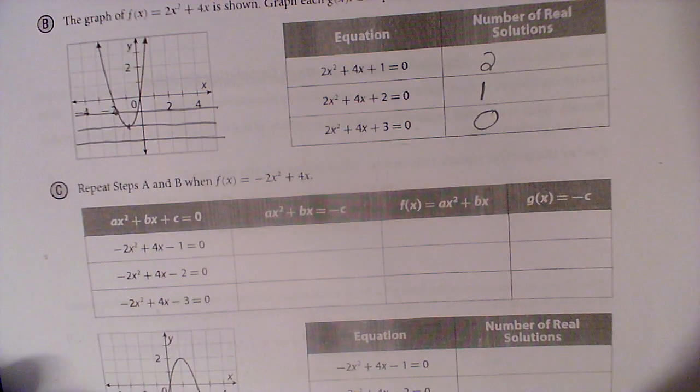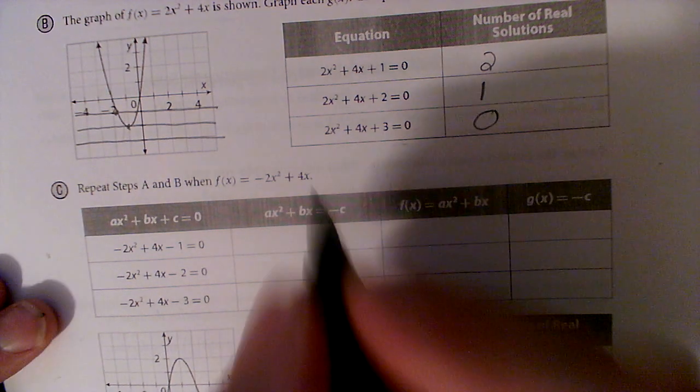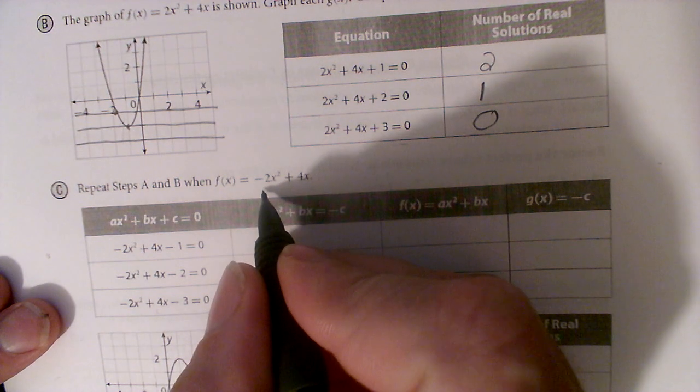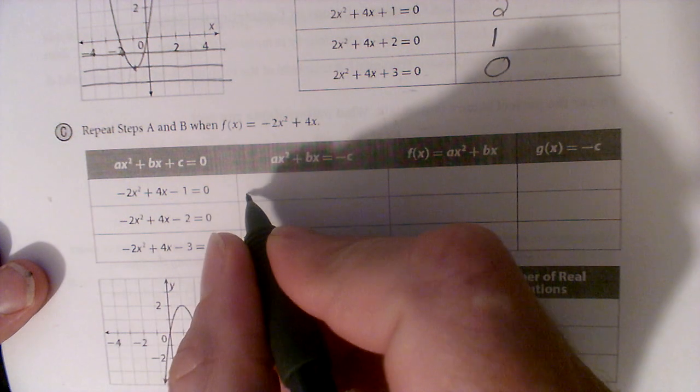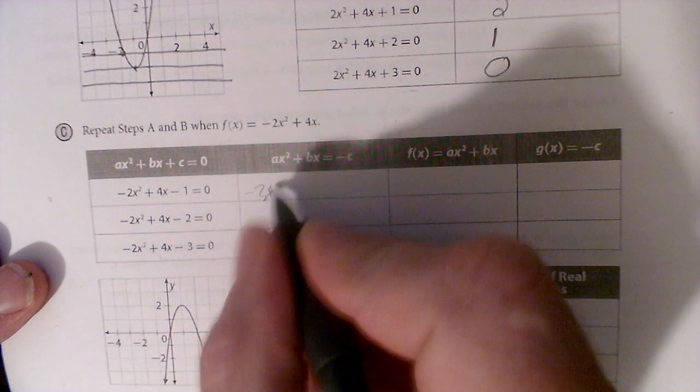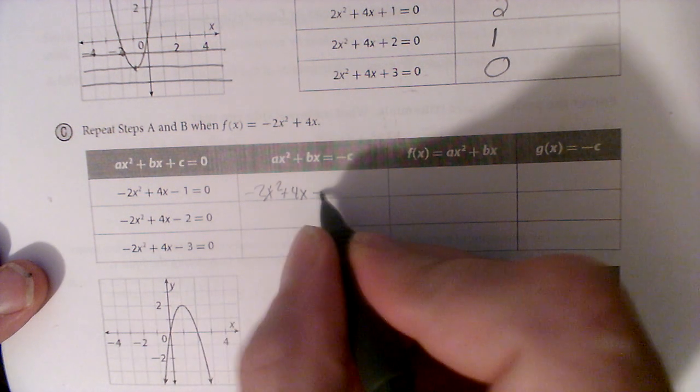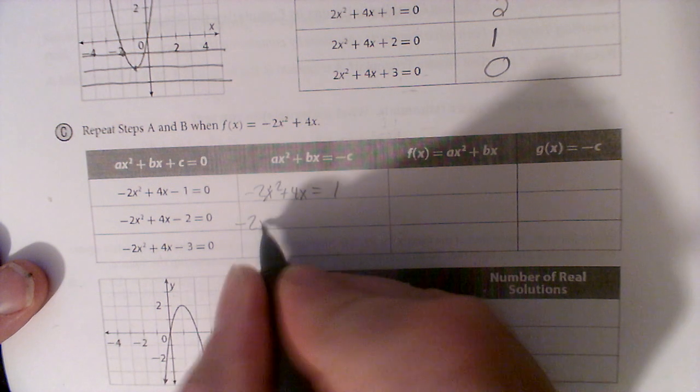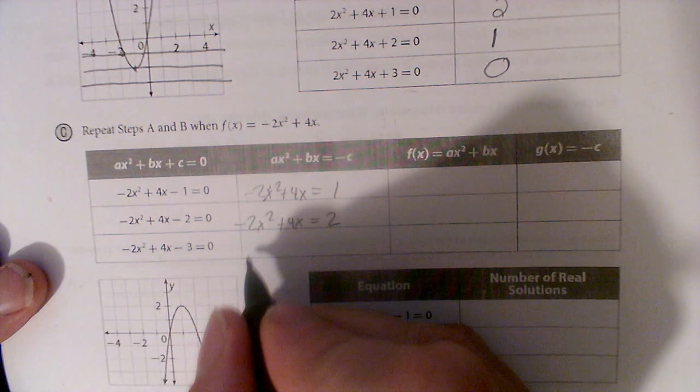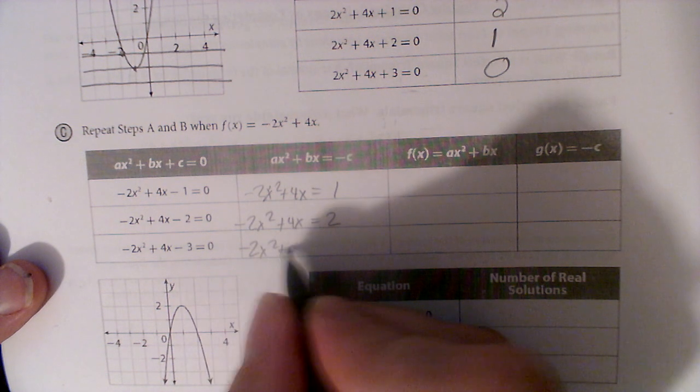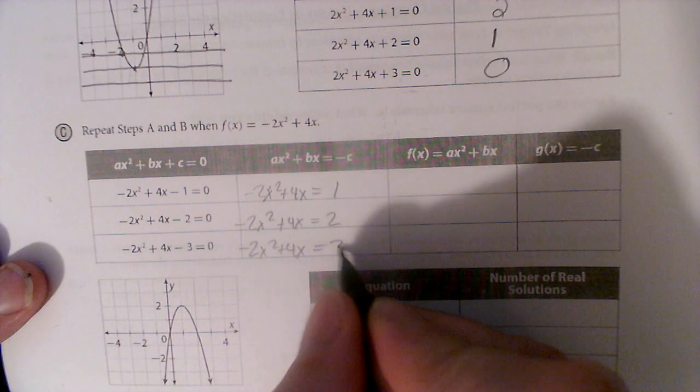Now, if you'll notice, this one is very similar with a couple exceptions. Instead of 2x squared, we have negative 2x squared. And our graph is going to look a little different right here. But same concept, right? We move the c. So negative 2x squared plus 4x. This time I add one to both sides. Negative 2x squared plus 4x. This time I add two to both sides. And negative 2x squared plus 4x. And this time I add three.